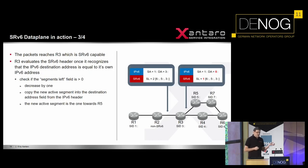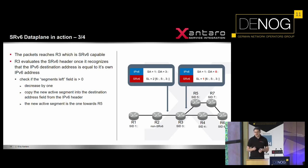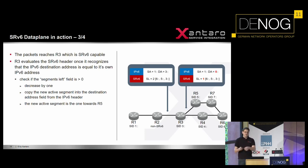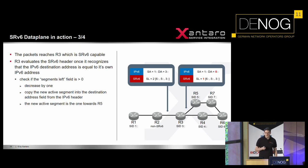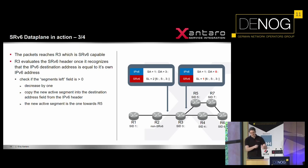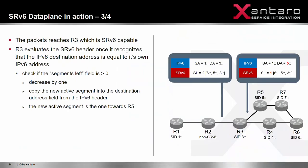Now the packet actually hits R3. R3 sees its own IP address as the destination — its own SID — and this tells R3 that it should process the segment routing header that comes after the IPv6 header. What R3 now does is decrease the segments left field by 1 — now set to 1 — and this tells the follow-up node, in this case R5, which is the currently active segment in the whole stack of segments. As mentioned before, we are not actually popping these segments — we are keeping them, but just moving the pointer around to what is the currently active segment.